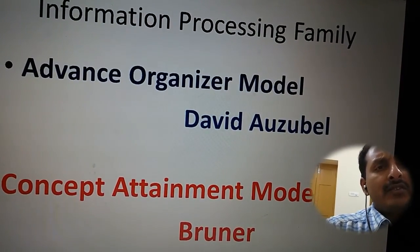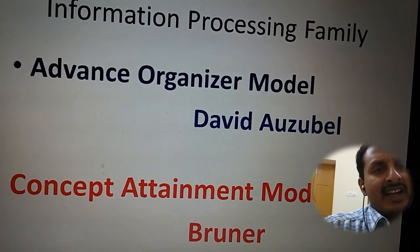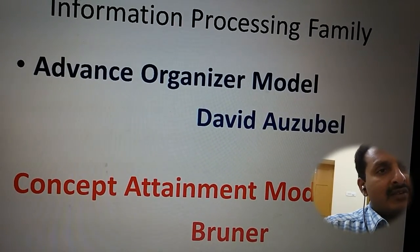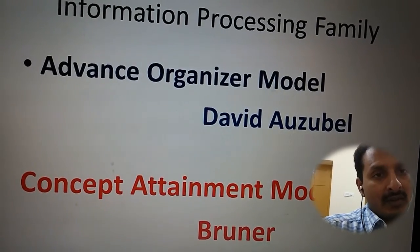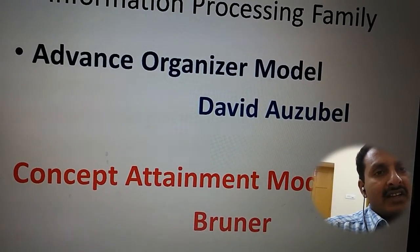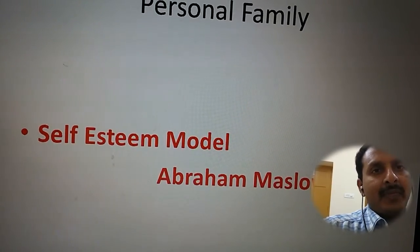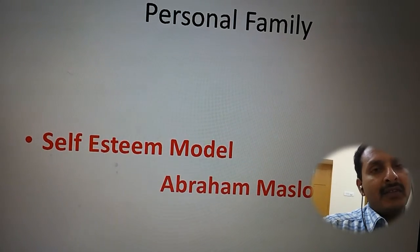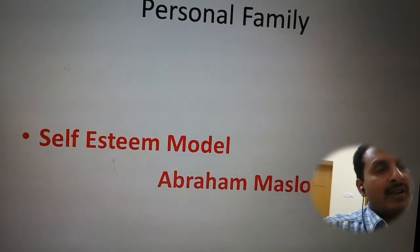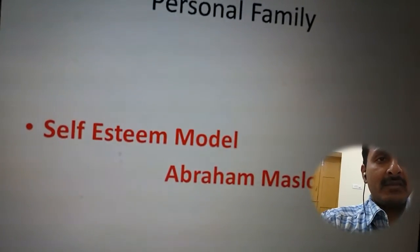The information processing family is the most popularly used family. The advance organizer model is based on David Ausubel's receptive learning, or meaningful verbal learning. And Bruner's theory paved the way for the concept attainment model. In the personal family, there is the self-esteem model, attributed to Abraham Maslow. These are some examples only.